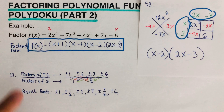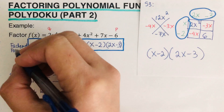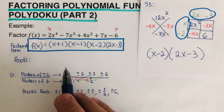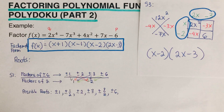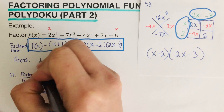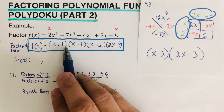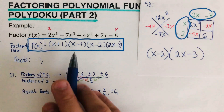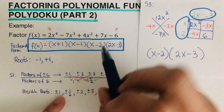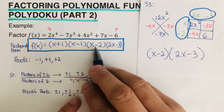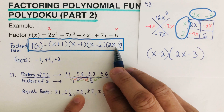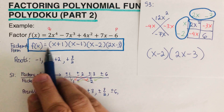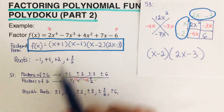Now if we want to know the roots of this polynomial, we use the zero product property. Let's verify all roots appear in the possible roots list we found earlier. From x plus 1 equals 0, x equals negative 1. From x minus 1 equals 0, x equals positive 1. From x minus 2 equals 0, x equals positive 2. From 2x minus 3 equals 0, x equals positive three halves. All of these roots are found in our list of possible roots. So this is the factored form, and these are the roots of the polynomial function.